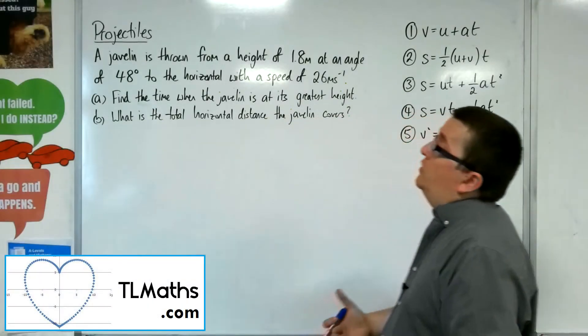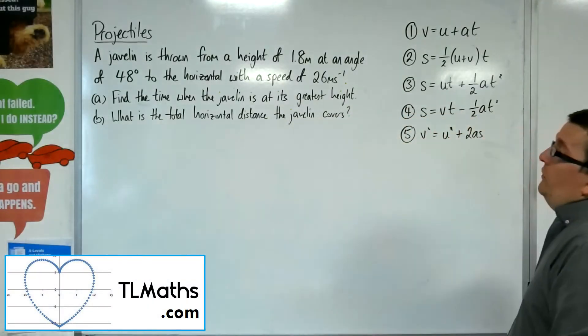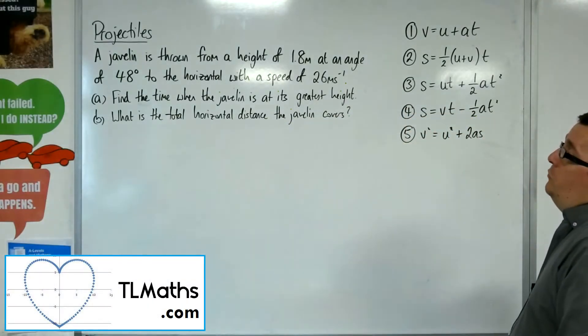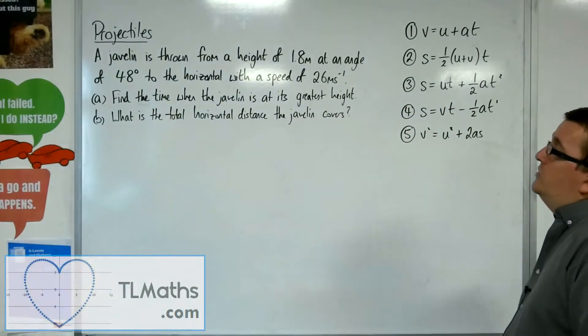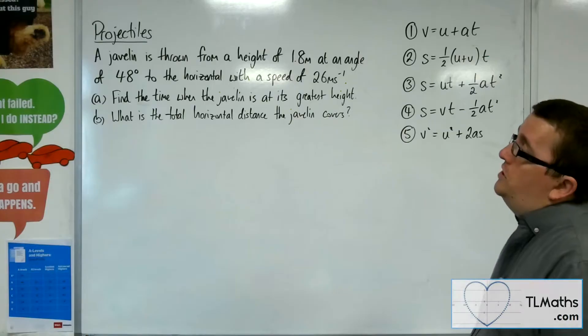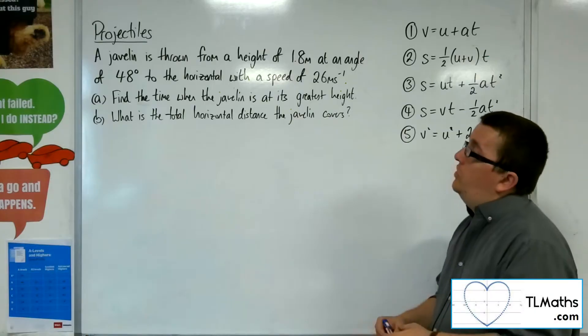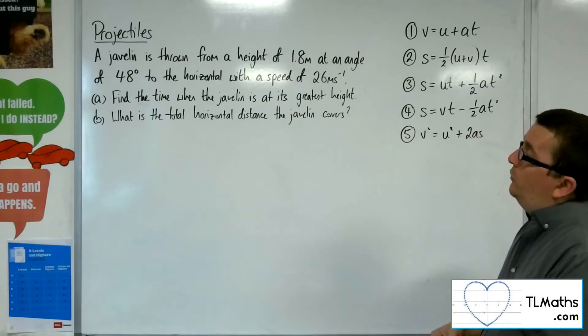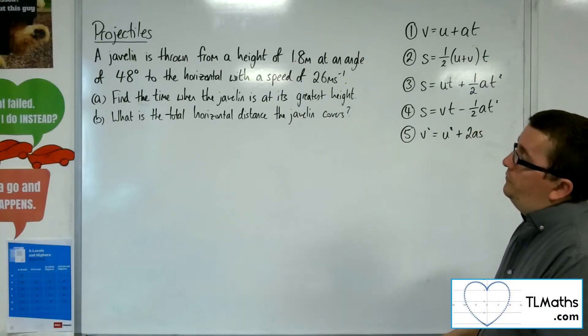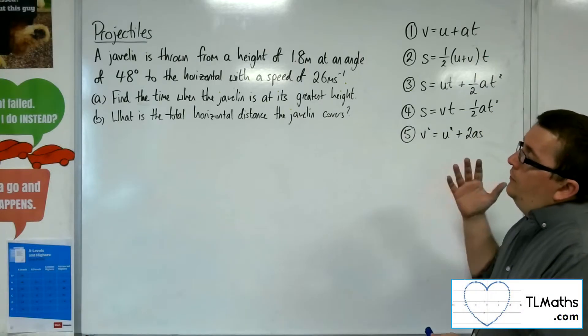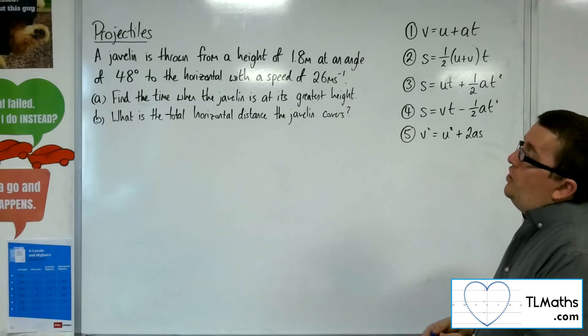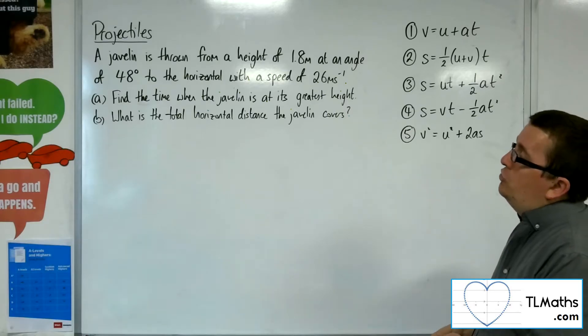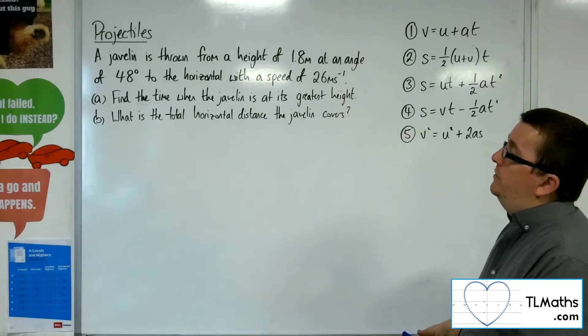In this video, we've got a javelin. It's thrown from a height of 1.8 metres at an angle of 48 degrees to the horizontal, with a speed of 26 metres per second. Find the time when the javelin is at its greatest height.